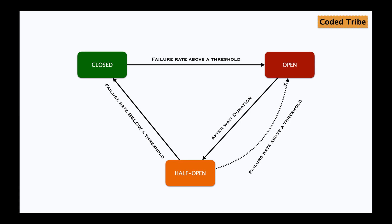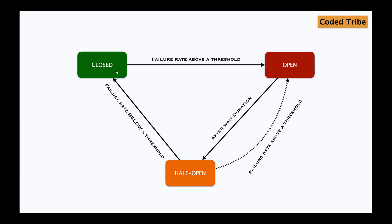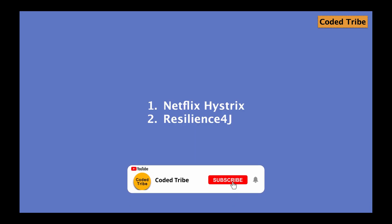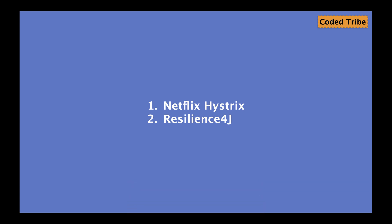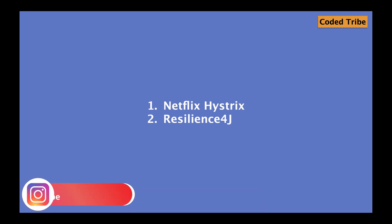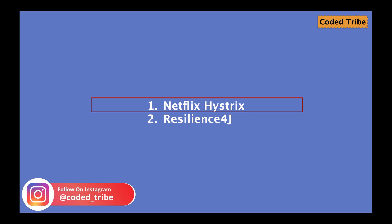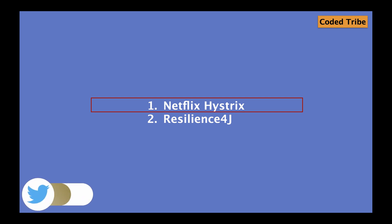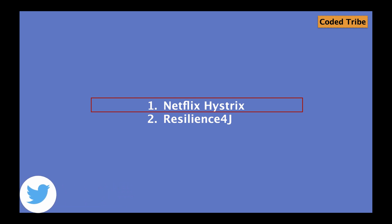So from the half-open state the circuit breaker can go either back to the open state or forward to the closed state. The closed state means the downstream service is up and working again and transactions between the two services can resume normally. Spring provides two kinds of circuit breaker implementations: one is Netflix Hystrix and the other is Resilience4j. However, Netflix has mentioned they will not provide further support for Hystrix, so Spring is keeping Hystrix in maintenance mode with no active support. Spring has recommended going ahead with Resilience4j for any circuit breaker implementation going forward, and in the next video we will see how to implement a circuit breaker in a Spring Boot application with Resilience4j.